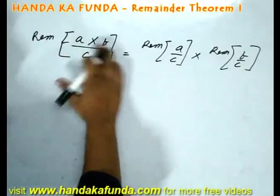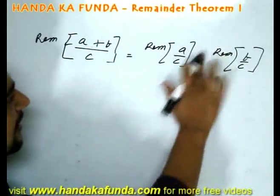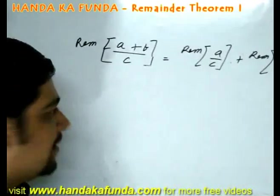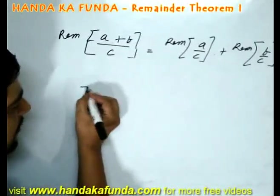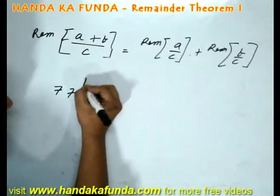Instead of multiplication, if it was a plus b, then I would have... What I am trying to say here is, for example, if my number is 77 to the power of 103,